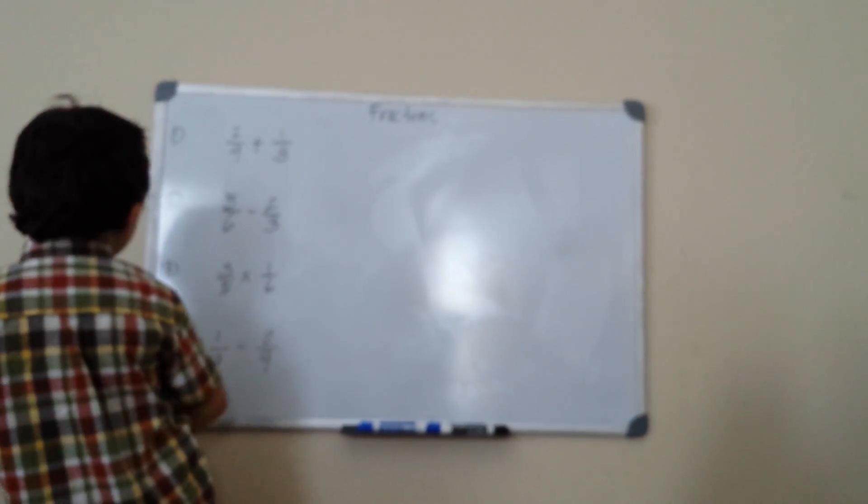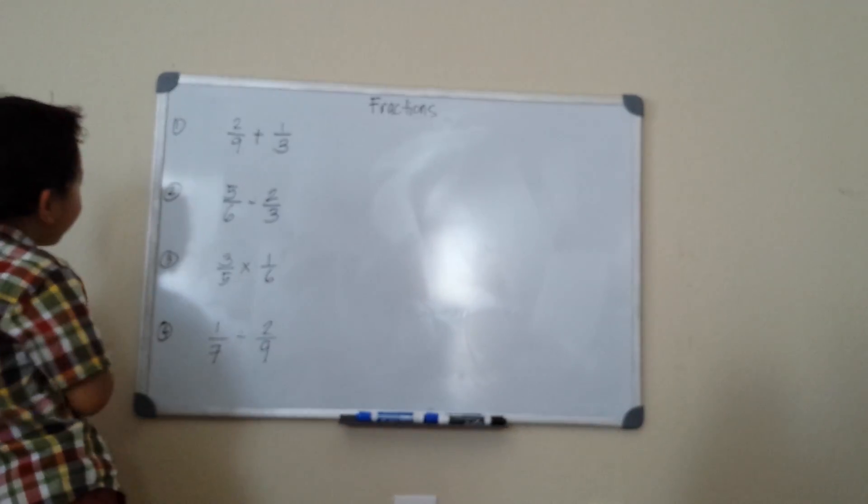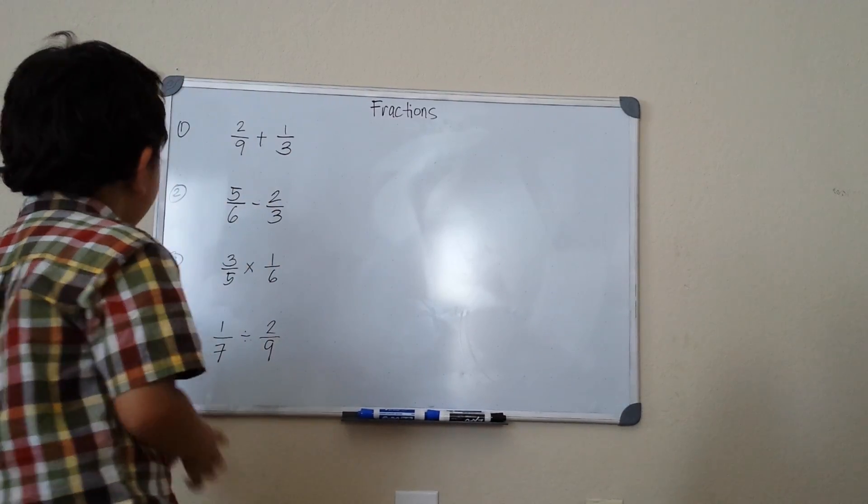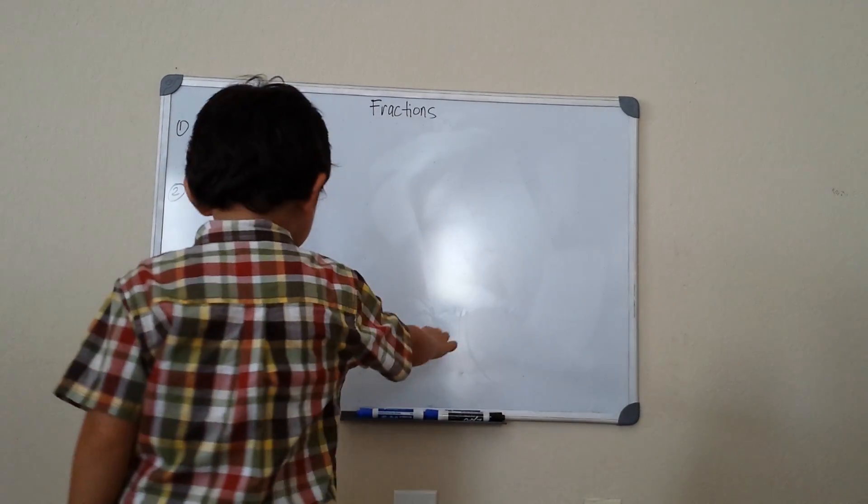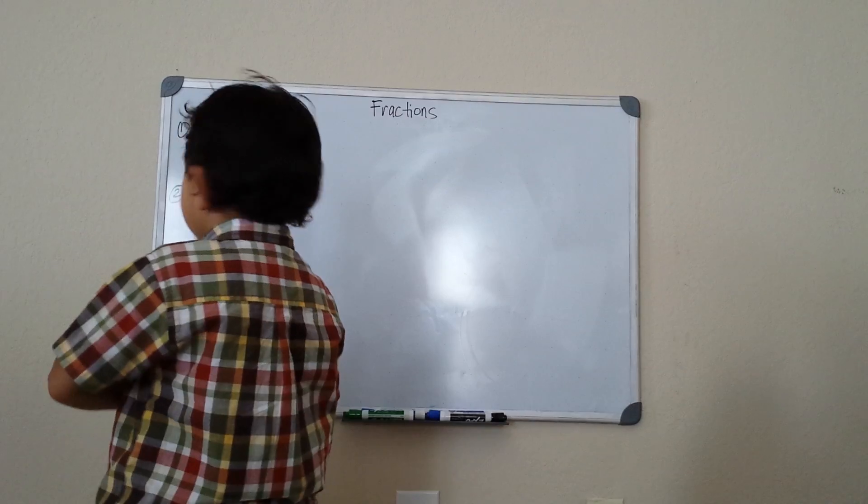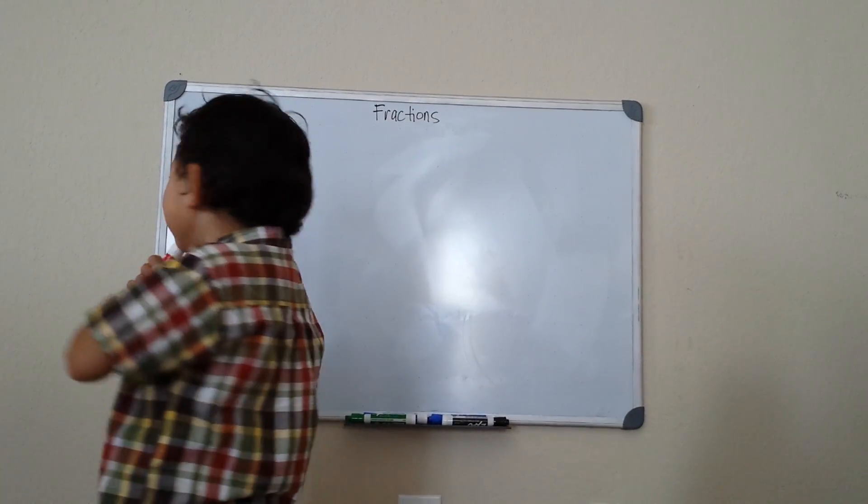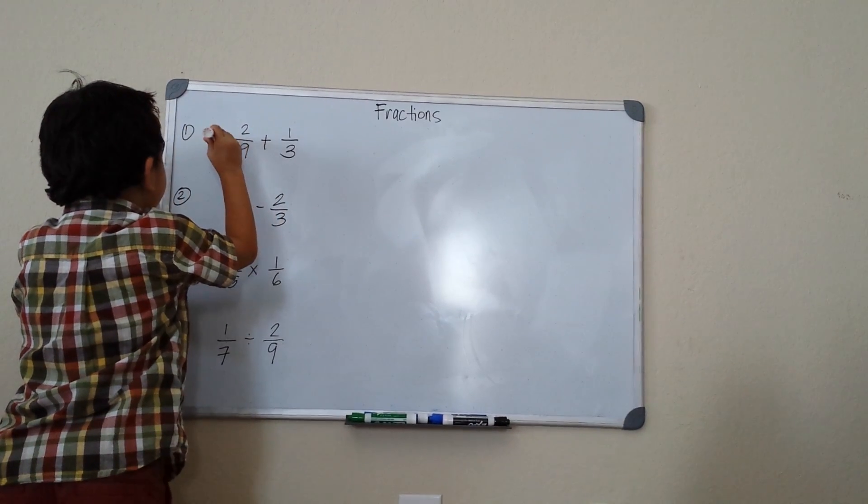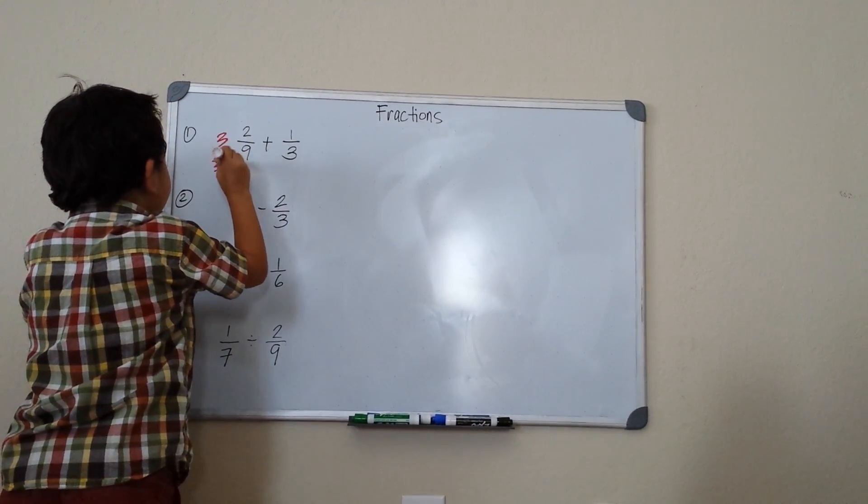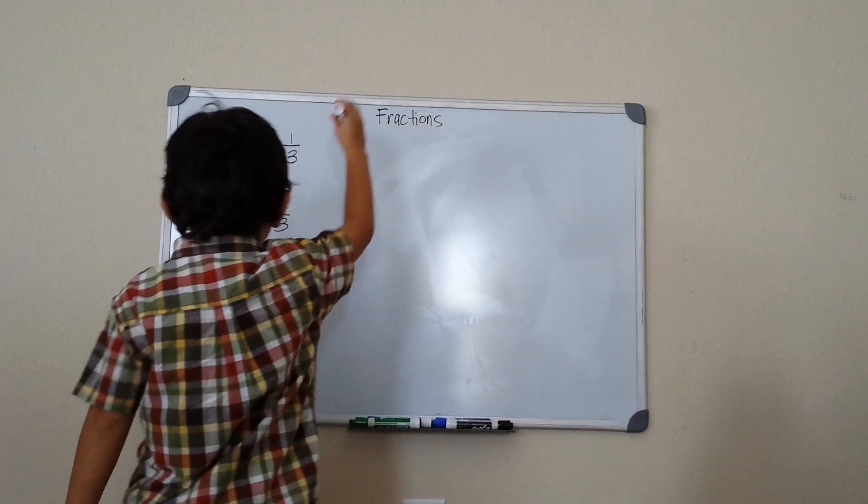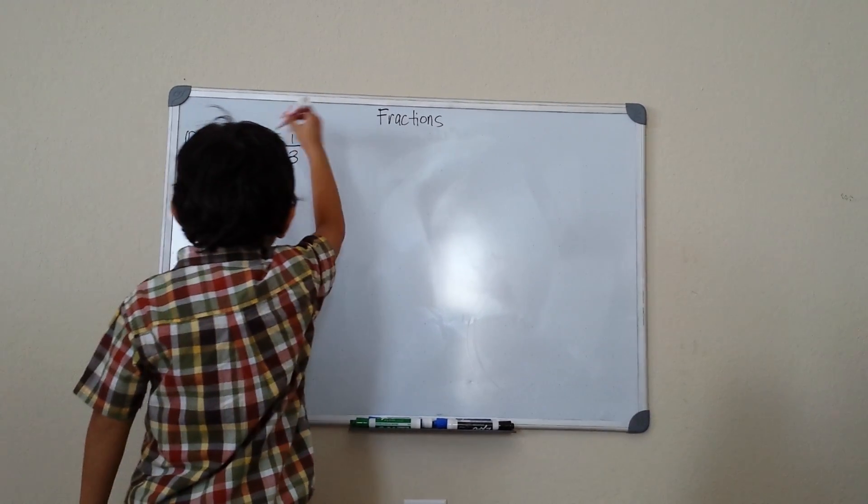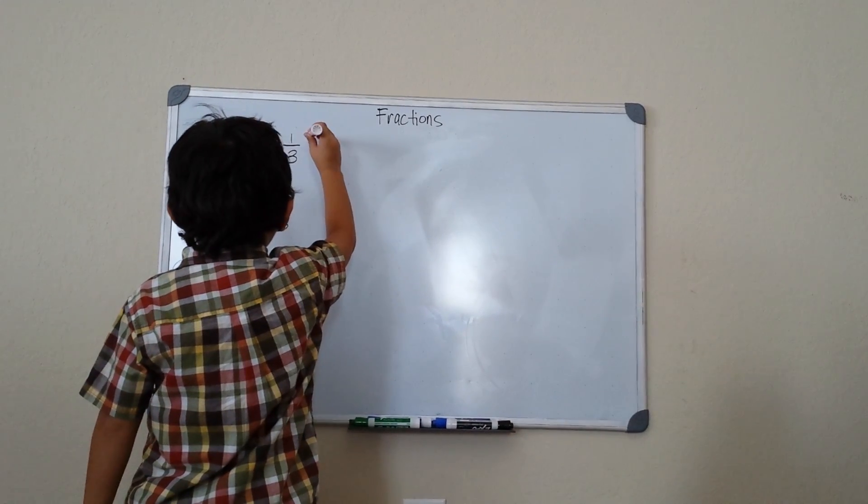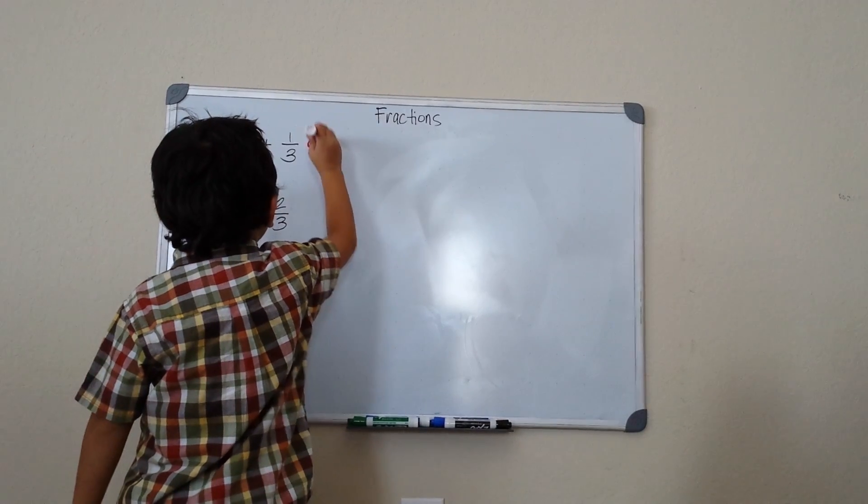So here is 2/9 plus 1/3. They're not the same denominator, so we need to get the same denominator and multiply. 3/3 times 2/9, and that will be 6/27.